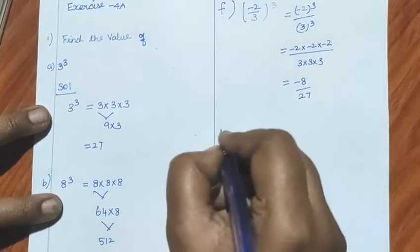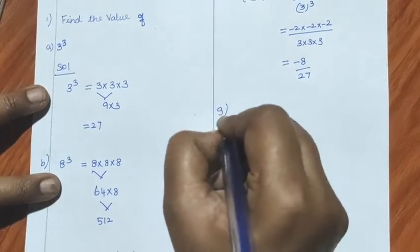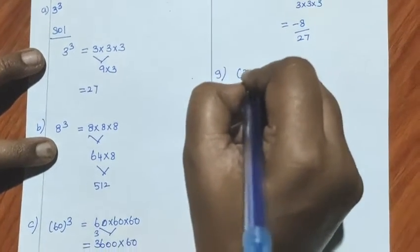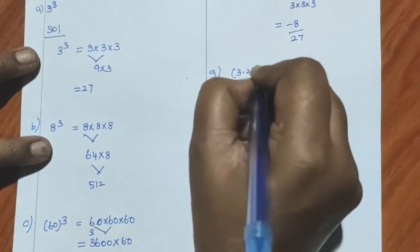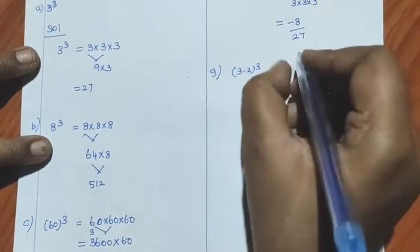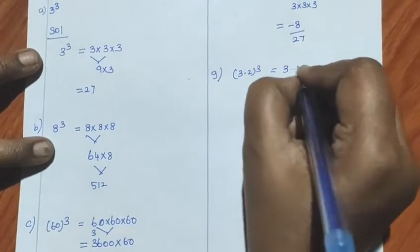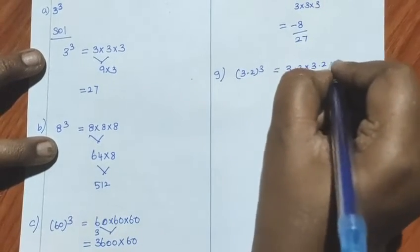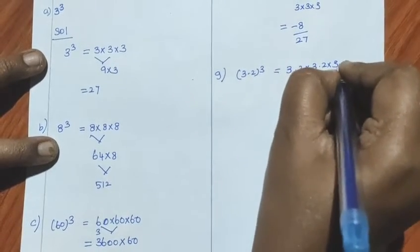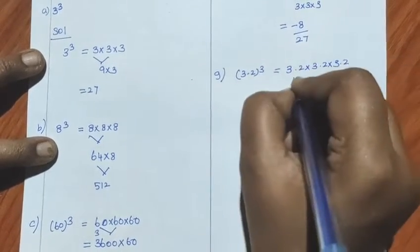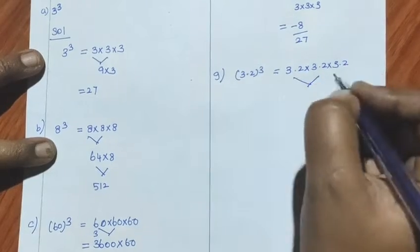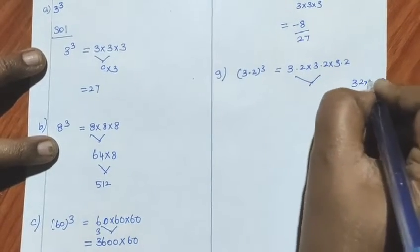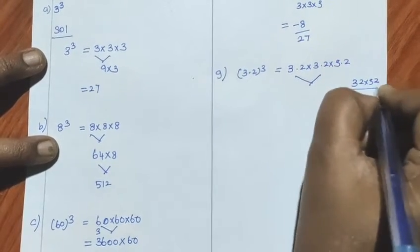Next, G sum — let's look at this example. What is the sum? 3.2 the whole cube. How do we calculate it? 3.2 into 3.2 into 3.2.